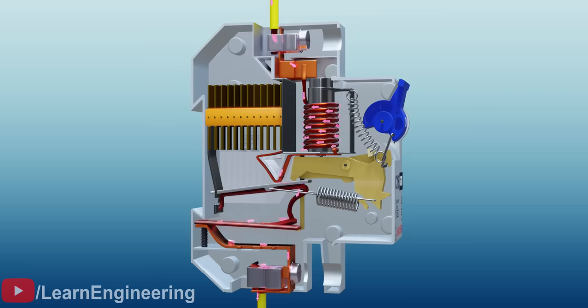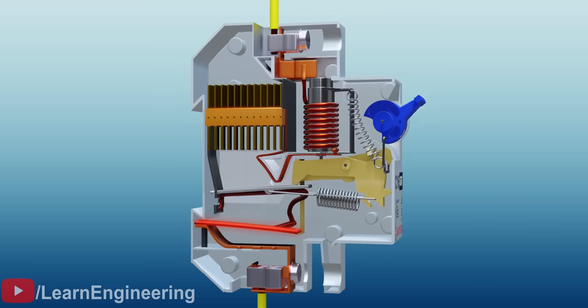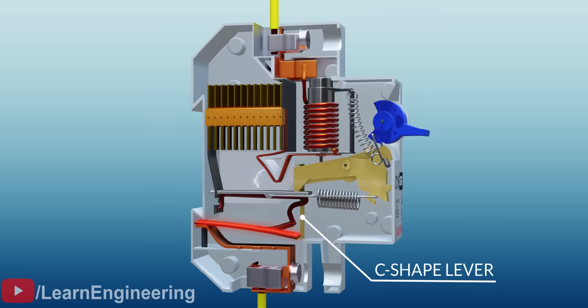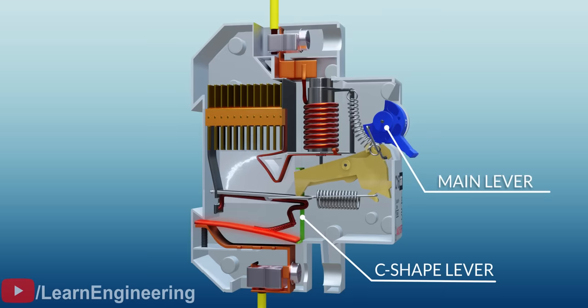In a bimetallic strip, as the current rises, heat causes the strip to bend slowly. This occurrence pushes a C-shaped lever, and thus the main lever, down, and it thereby opens the contacts.